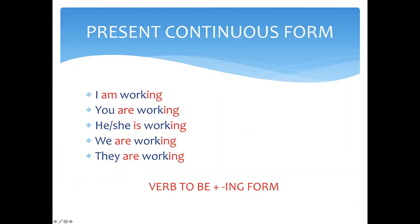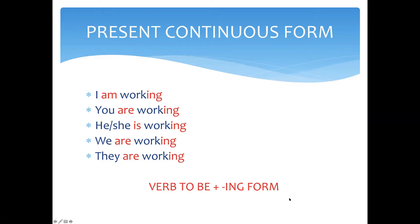The form of present continuous is illustrated here with examples: I am working, you are working, she is working, we are working, they are working. So, it is verb to be plus the ing form. This is the formulation of the present continuous tense: verb to be plus ing form.